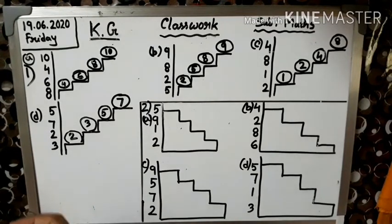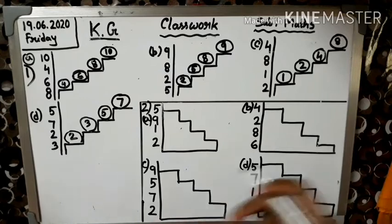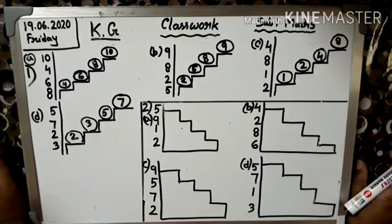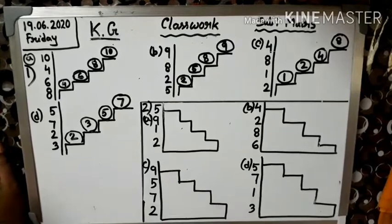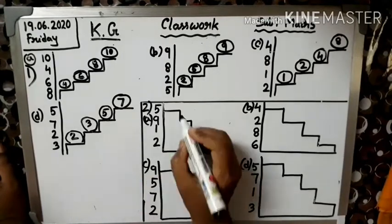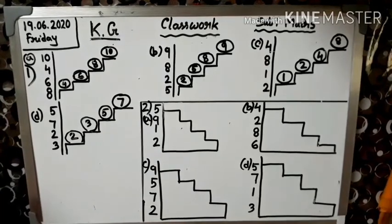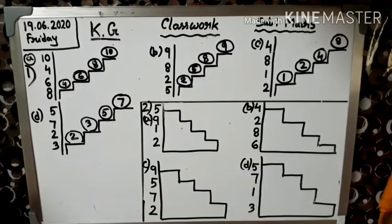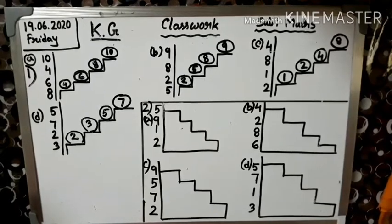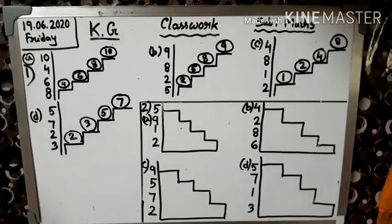Abhi hum log banaenge descending order. Descending means, pehle hi bola tha, biggest number, big number. Yaha big number kaun sa hai? Nine is big number. Toh learn karo: ten, nine, eight, seven, six, five, four, three, two, one, zero. Repeat again: ten, nine, eight, seven, six, five, four, three, two, one, zero. Yeh jab repeat karoge, toh tumko bohot subhishta hoga descending order karne ke liye.